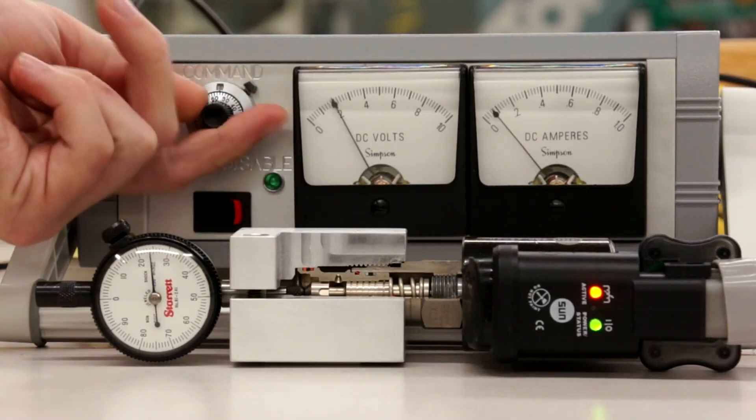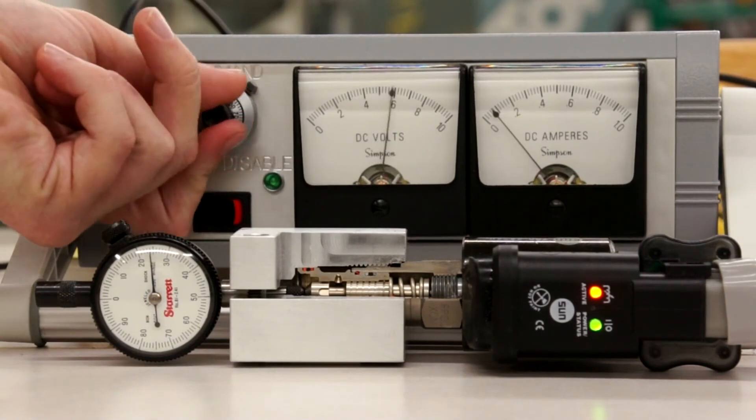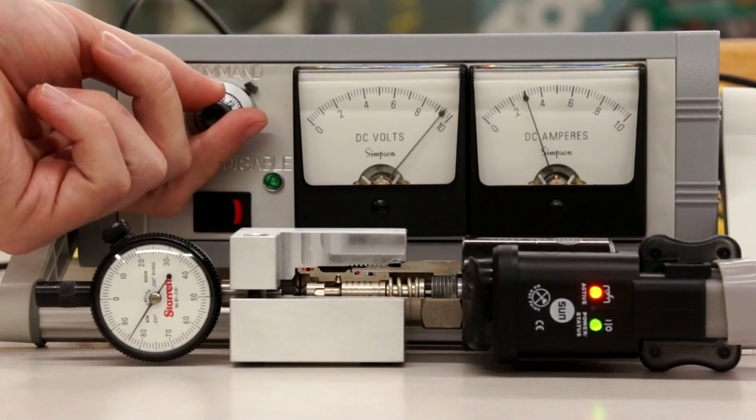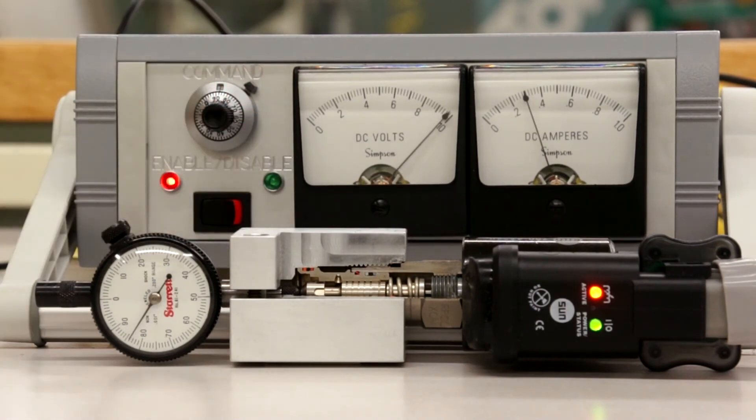The other input is full command, and when we say full command, we mean anything between 8 and 10 volts. So now that we have crossed the threshold of 8 volts, we are fully stroking the valve.